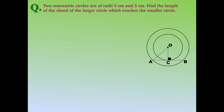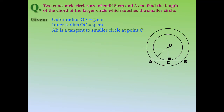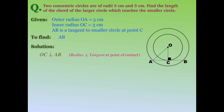The next question: two concentric circles have radii 5 cm and 3 cm. Find the length of the chord of the larger circle which touches the smaller circle. We are given the outer circle with radius OA equal to 5 cm and the inner circle with radius OC equal to 3 cm. AB is a tangent to the smaller circle at point C, and AB is also a chord of the larger circle. We need to find the length of AB.